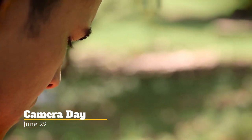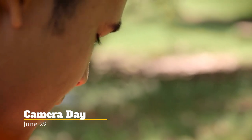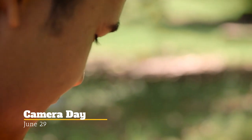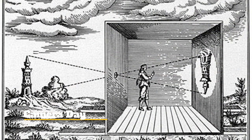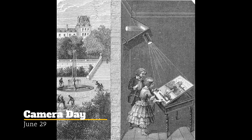Cameras as we know them have been around since about the early 1800s, although a projection technique known as camera obscura was in use as early as the 1500s, and possibly earlier, to project images onto a surface in the process of making a painting.